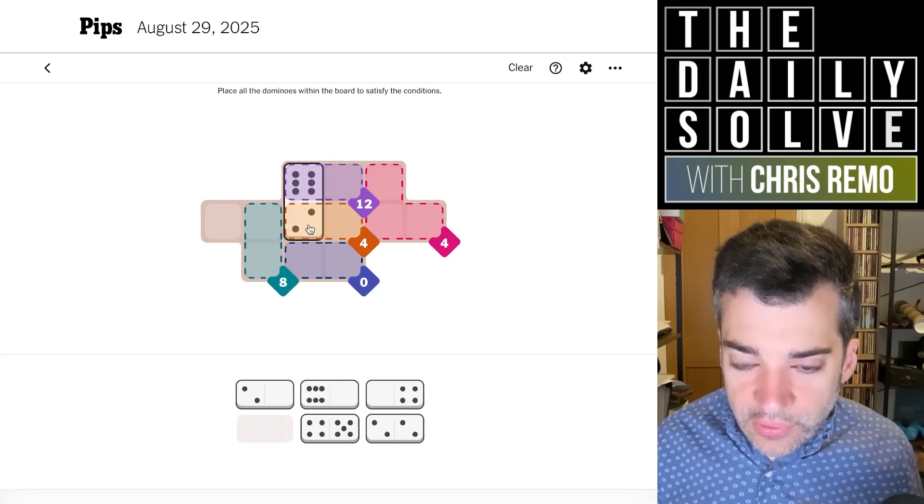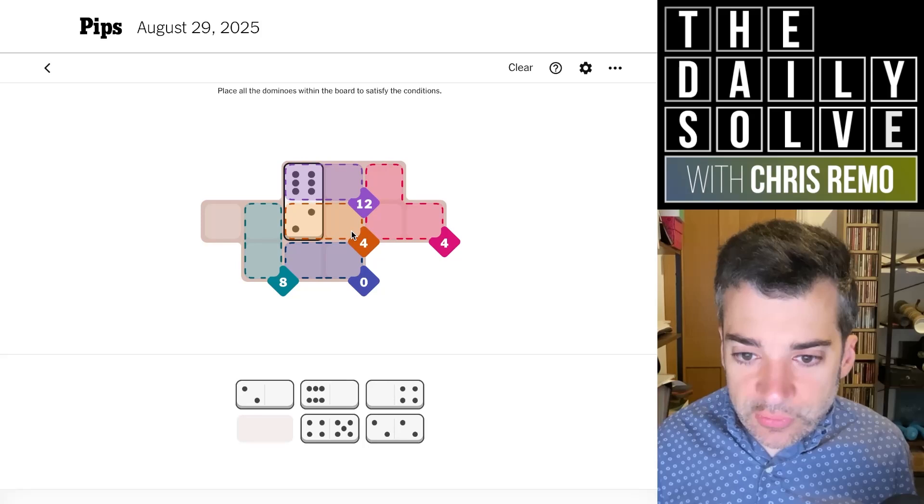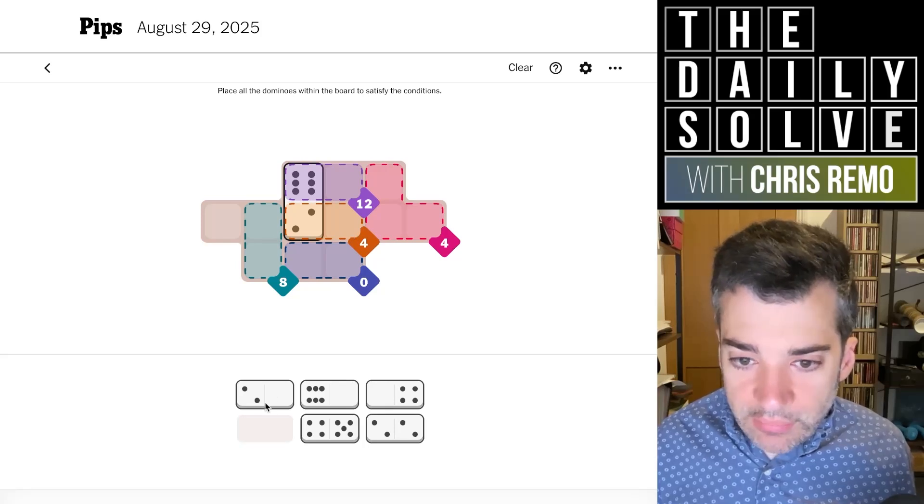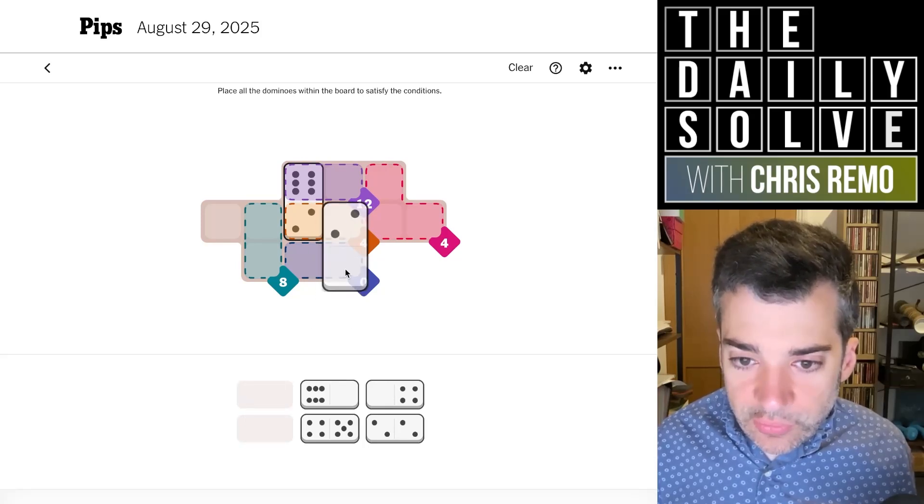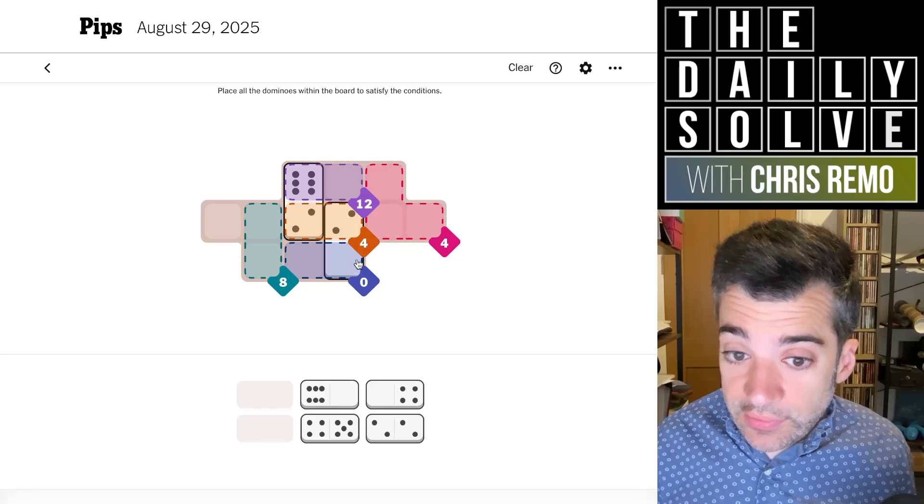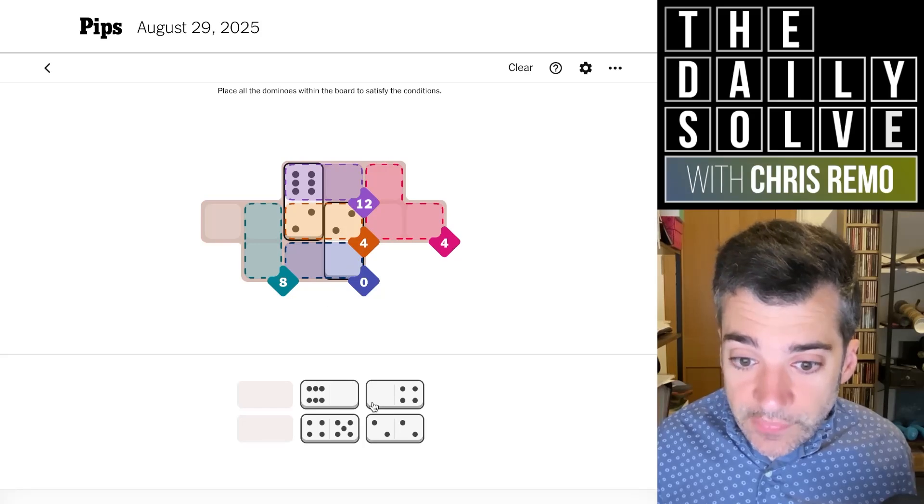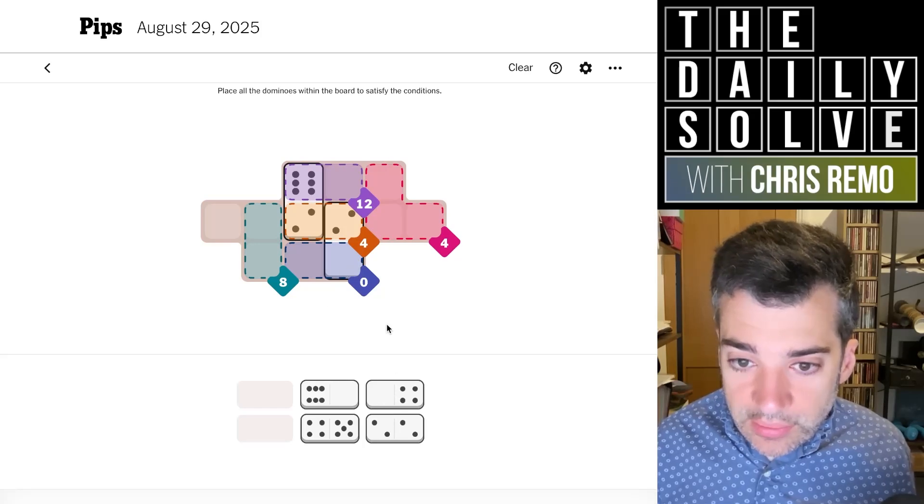And then the other one will need a two sticking out of the four. I think one of them will need to be a two going into the zero to maintain this zero region here. And then the other six must go here.